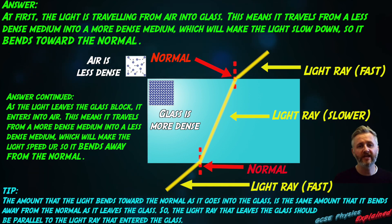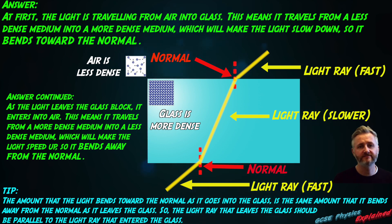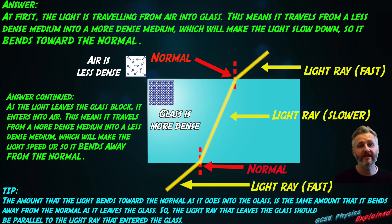Tip: the amount that the light bends toward the normal as it goes into the glass block is the same amount that it bends away from the normal as it leaves the glass block. So the light ray that leaves the glass should be parallel to the light ray that entered the glass block.